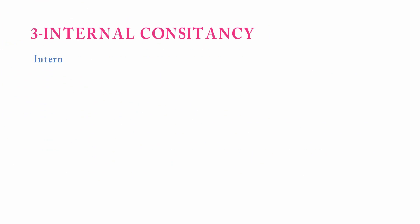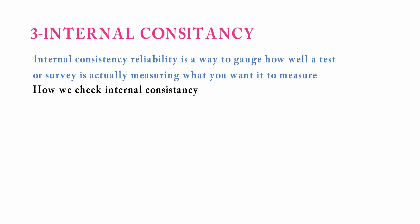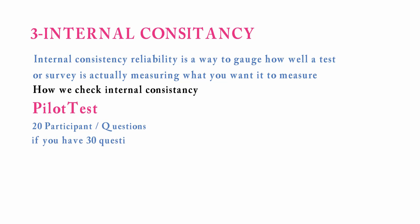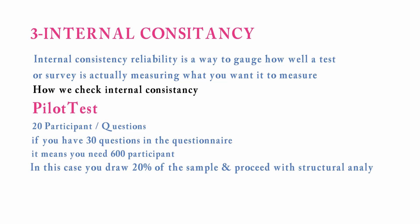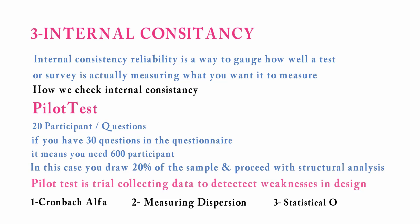Number three is internal consistency. This is a way to measure how well a test or survey is actually measuring what you want to measure. Before checking internal consistency, we go for a pilot test. In the pilot test we take 20 percent of the total collected data sample as a trial to detect weakness in the design. We can check internal consistency by Cronbach's alpha, measuring dispersion, and statistical outliers.